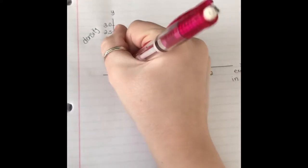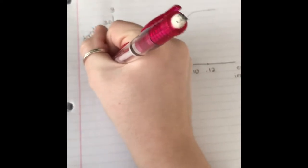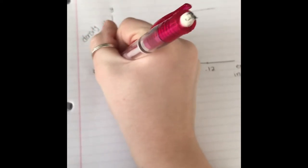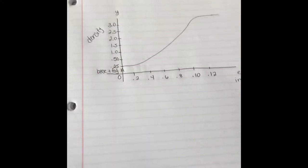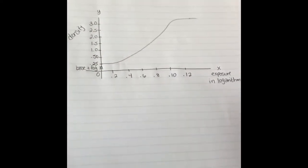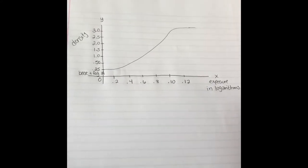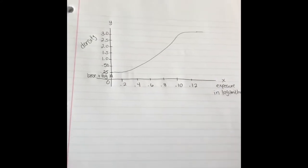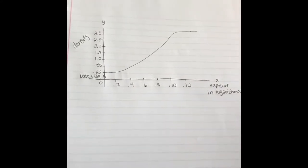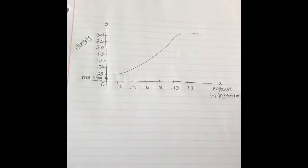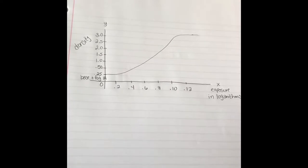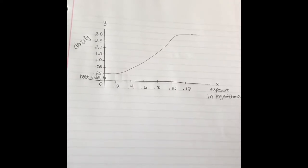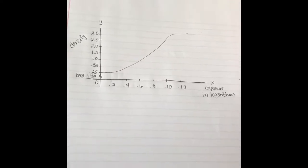Over here is the base plus fog. Base plus fog is density without exposure, or inherent density, meaning that there is density already on the film from the manufacturer without ever being exposed.